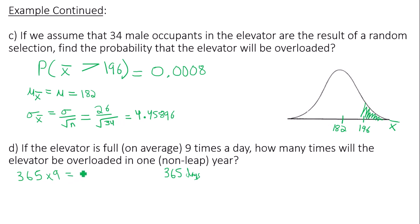And of those 3,285 times, it will be overloaded 3,285 times the probability found in the previous section. It's not very often, but hey, let's see how many times per year the elevator is predicted to be overloaded. And you do the multiplication, and you get approximately three times per year.